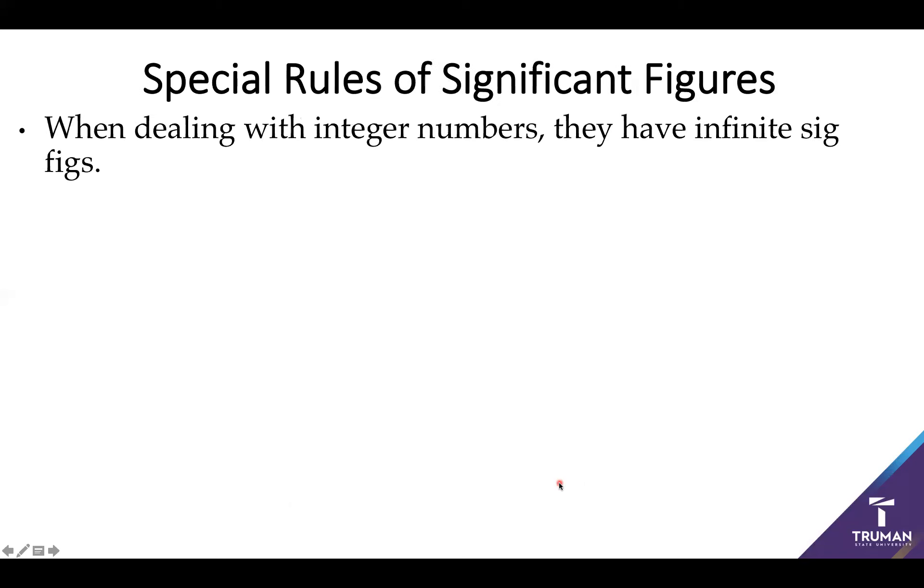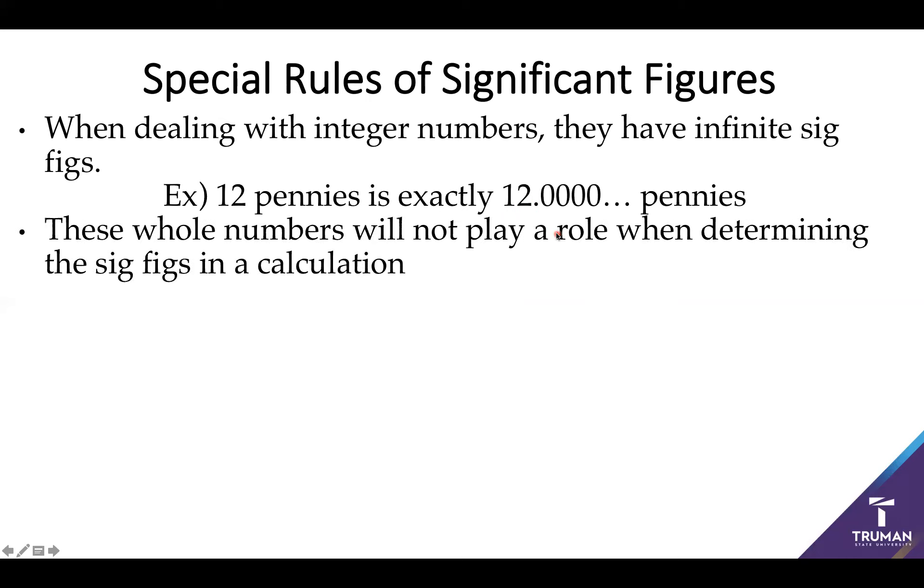So one of the other, there's a couple other extra rules we should keep in mind when playing with significant figures. The first of which is whenever I'm dealing with an integer number, they have infinite sig figs. Now this begs the question of what is an integer number? This is going to be a number that only works in integer qualities. It has to be a whole number. A good example is let's say I've got 12 pennies. Well, that's going to be 12.00000 ad infinitum. If I say I've got three of something, if I have exactly three, that's an integer number. So whenever I have an integer like that, it does have infinite number of sig figs. And that's actually fairly useful. In general, these numbers won't play, these whole numbers won't play a big role when determining sig figs in a calculation. And that's actually fairly useful.